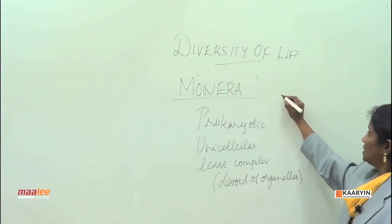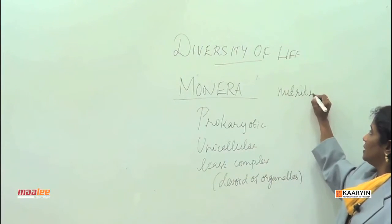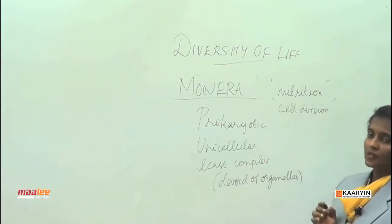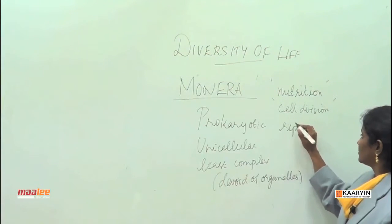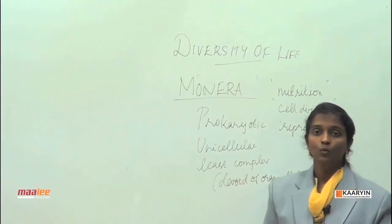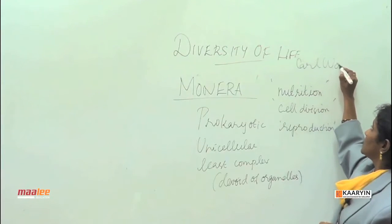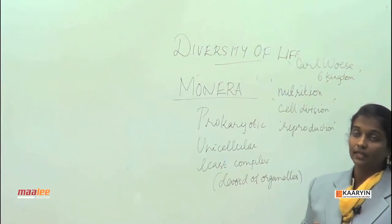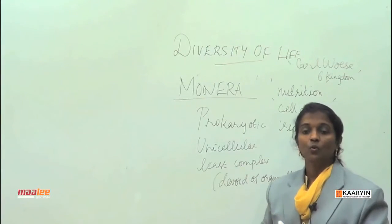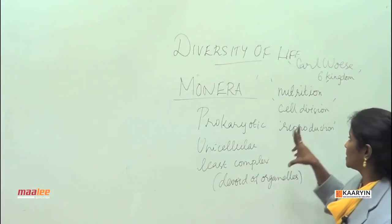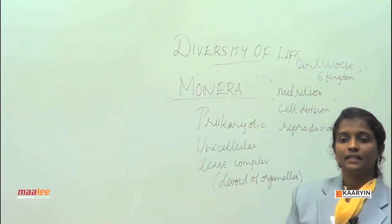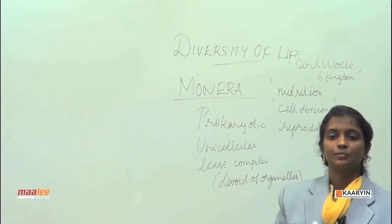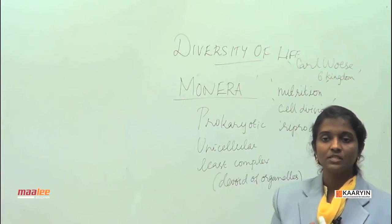Robert Whittaker's Five Kingdom Concept is accepted in colonial countries, but the American system does not accept it, because Whittaker's system is based on factors such as nutrition, cell division, and reproduction. Carl Woese's Six Kingdom Concept, which Americans believe in, does not take these factors into consideration. Instead, it depends on DNA analysis to categorize the world's organisms into Six Kingdoms.